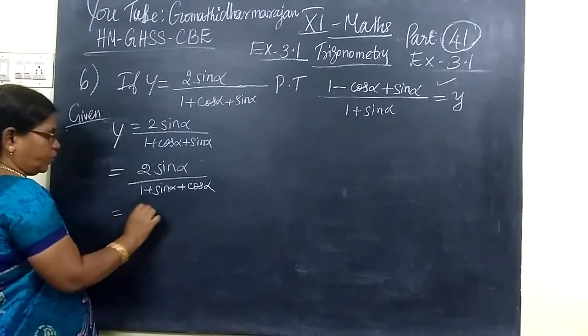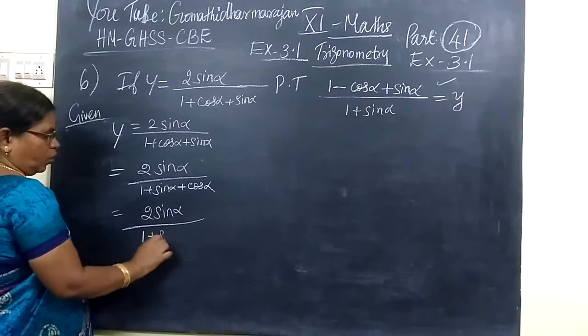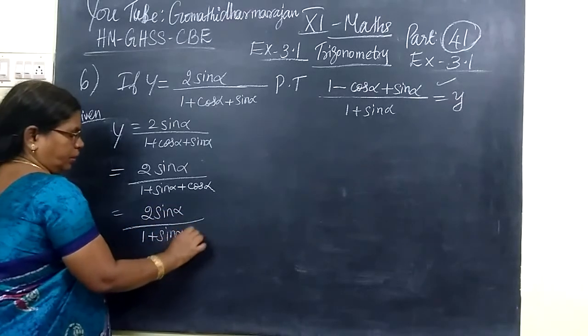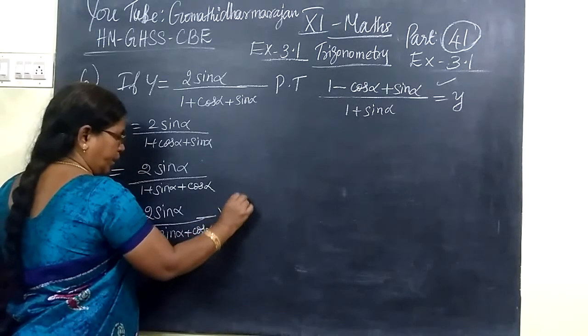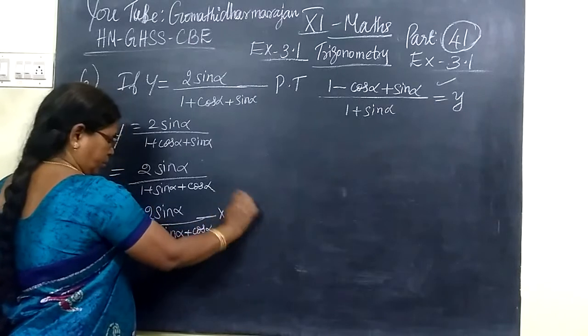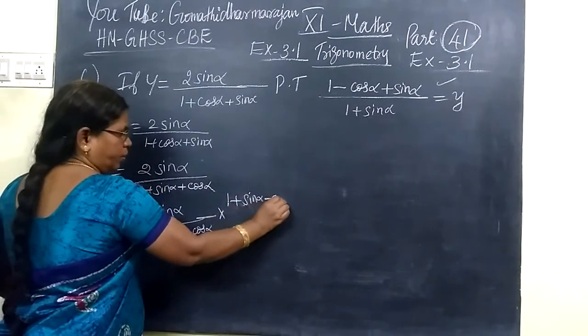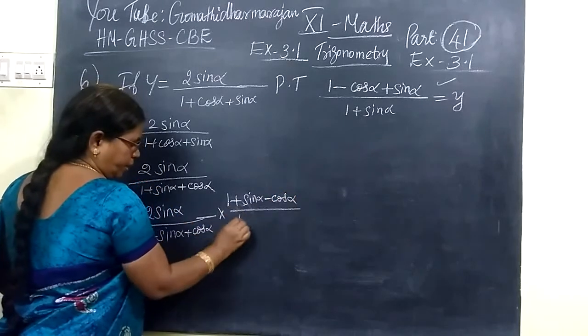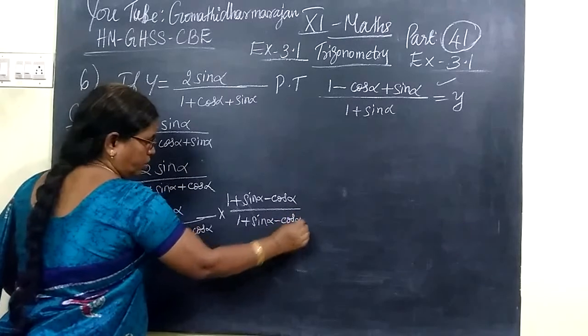We are going to take conjugate for that. When you take conjugate, we use the opposite sign of the denominator. So instead of plus cos alpha, you use minus cos alpha. So, 1 plus sin alpha minus cos alpha divided by 1 plus sin alpha minus cos alpha.